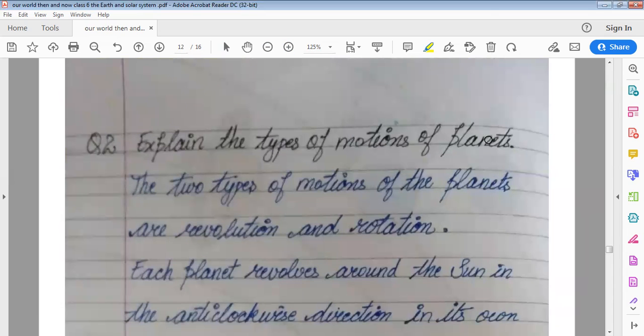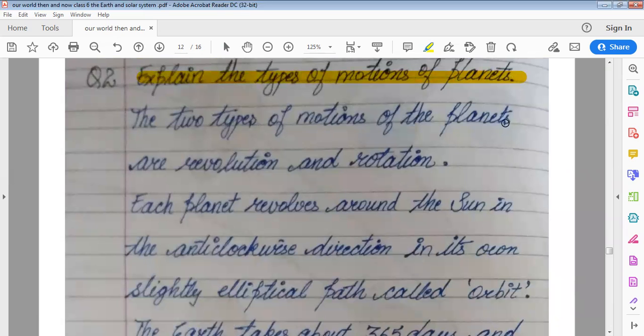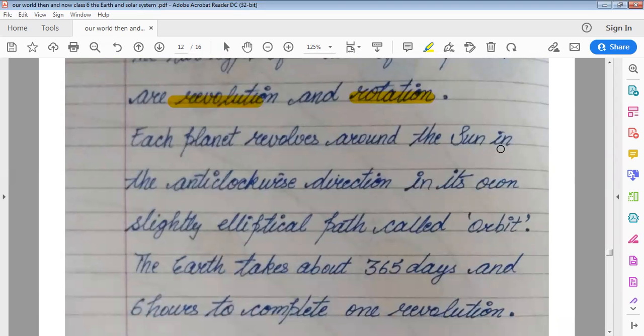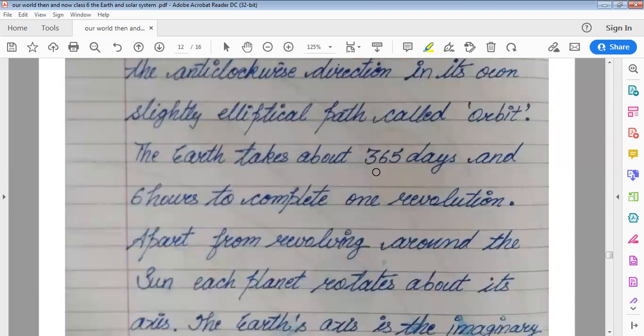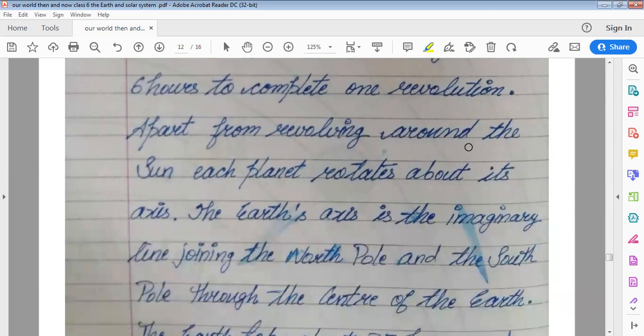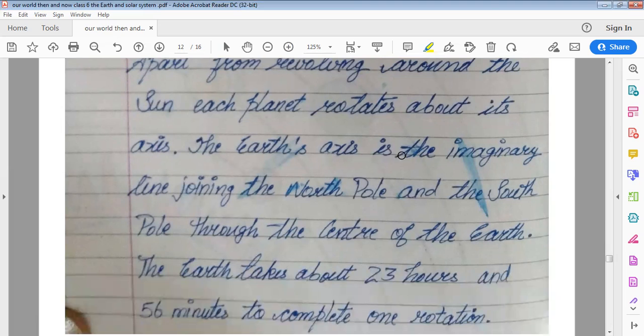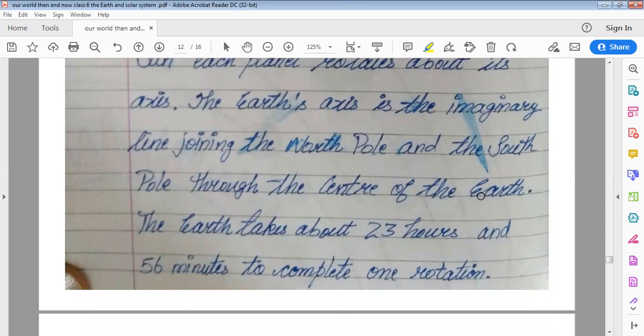Explain the types of motions of planets. The two types of motions of the planets are revolution and rotation. Each planet revolves around the sun in the anticlockwise direction in its own slightly elliptical path called orbit. The Earth takes about 365 days and six hours to complete one revolution. Apart from revolving around the sun, each planet rotates about its axis. The Earth's axis is the imaginary line joining the North Pole and the South Pole through the center of the Earth. The Earth takes about 23 hours and 56 minutes to complete one rotation.